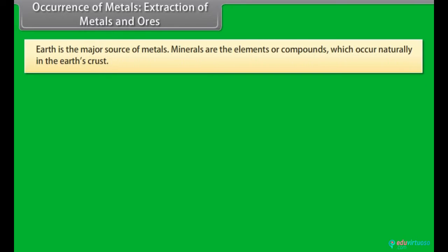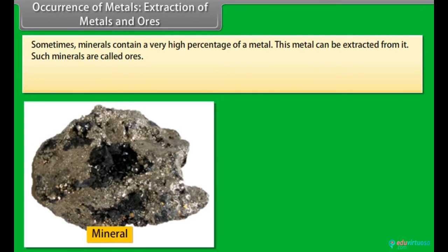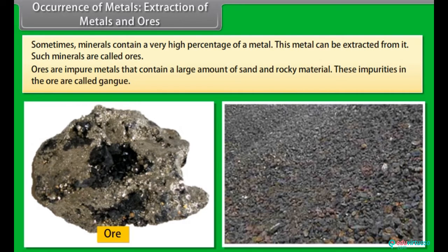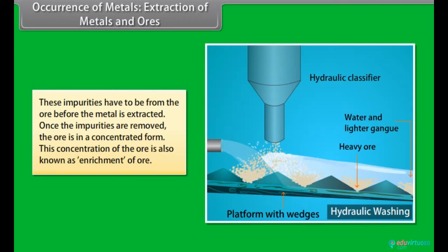Occurrence of metals. Extraction of metals and ores. Earth is the major source of metals. However, seawater also contains some soluble salts. Minerals are the elements or compounds which occur naturally in the earth's crust. Sometimes minerals contain a very high percentage of a metal. This metal can be extracted from it. Such minerals are called ores. Ores are impure metals that contain a large amount of sand and rocky material. These impurities in the ore are called gangue. These impurities have to be removed from the ore before the metal is extracted. Once the impurities are removed, the ore is in a concentrated form. This concentration of the ore is also known as enrichment of ore.